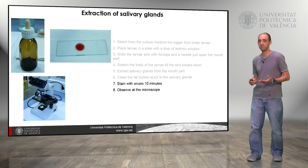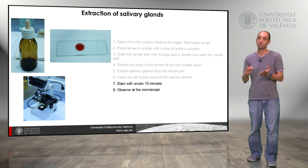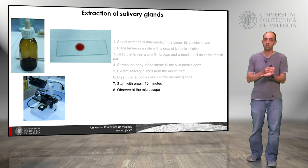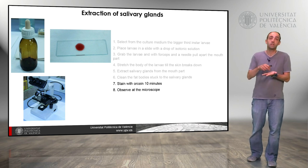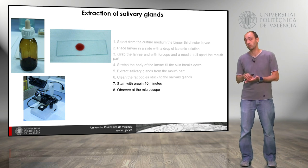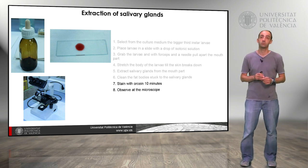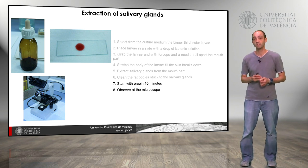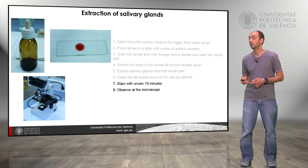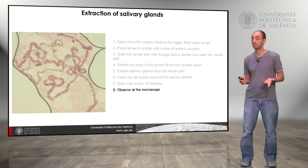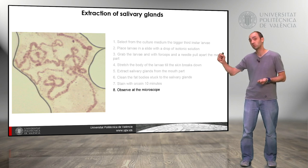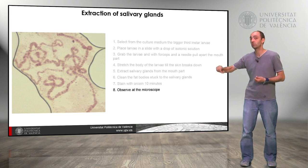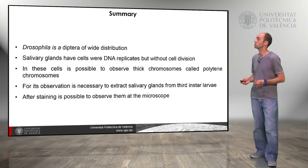The next step will be to stain them with orcein. We take out everything from the slide except the salivary glands and put the glands in a new slide with a drop of orcein. We wait about 10 minutes until they stain, and then we can observe them at the microscope. We can see the chromosomes are completely stained, we see the characteristic bands we discussed previously, and we can see all the arms of the chromosomes.